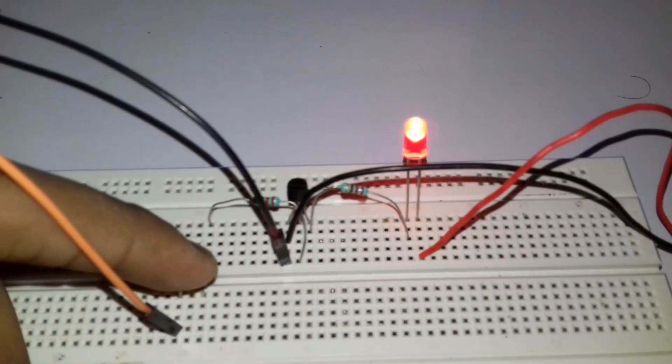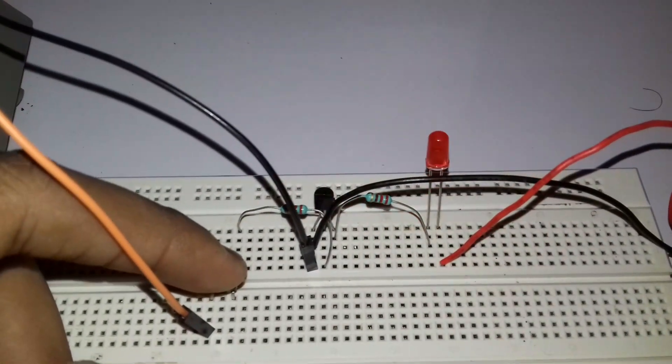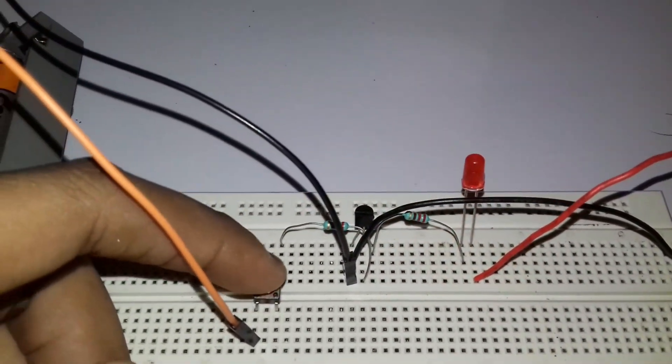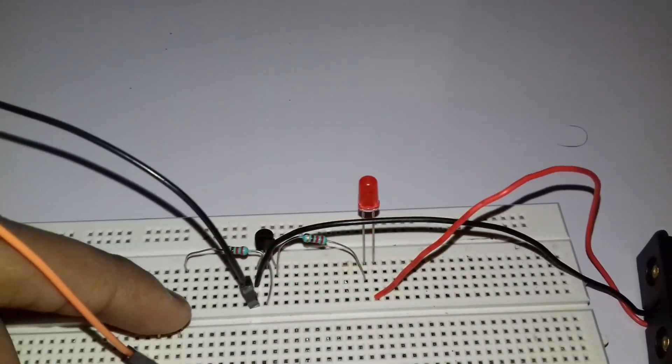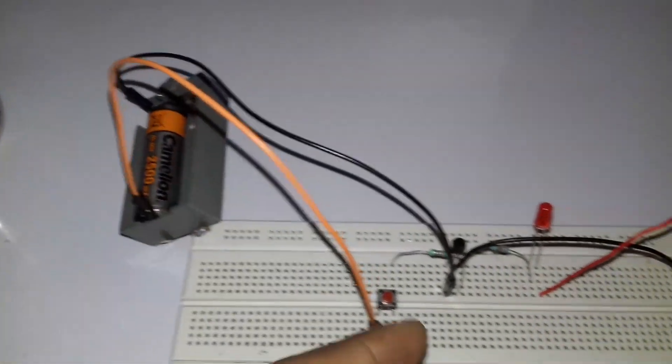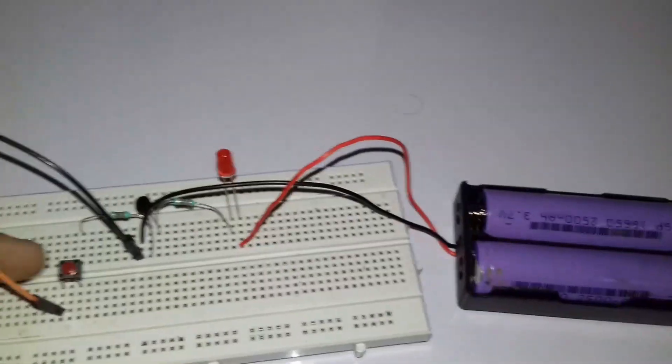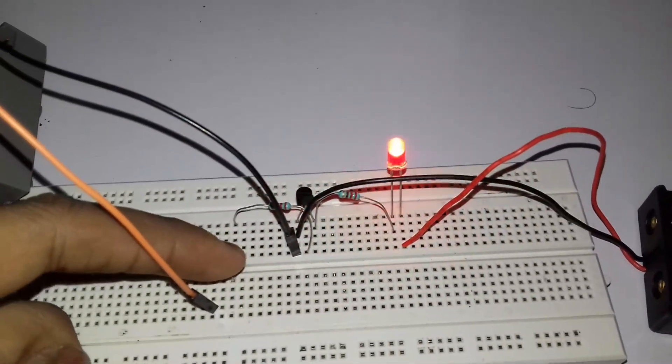So this is how the transistor is working as a switch. I am just pressing this switch here and the LED is glowing. So I am just controlling the base current here, and the transistor is controlling the collector current to glow the LED.